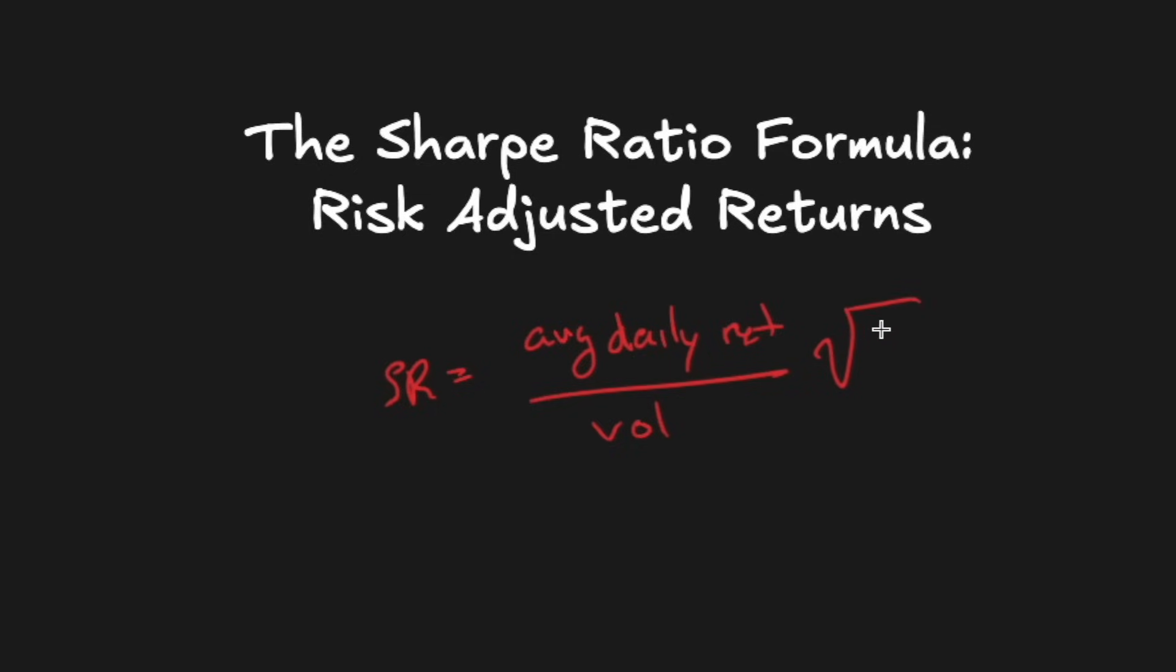One detail I left out here is that typically we multiply this in practice by a factor of 252, and that's because that will annualize the Sharpe ratio. Typically, to keep things apples to apples, we look at things on an annual time frame. The factor of 252 comes about because we're using daily data and there are 252 trading days in a calendar year, excluding weekends and holidays. If you're using monthly data, you would have a square root of 12 here instead, because there are 12 months in a year.